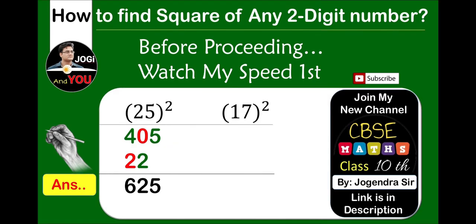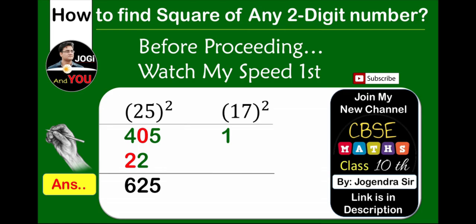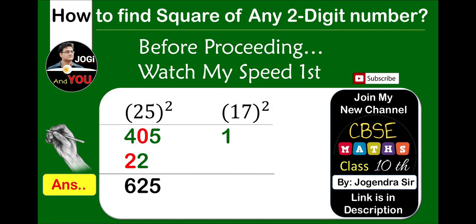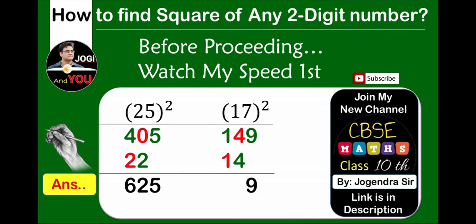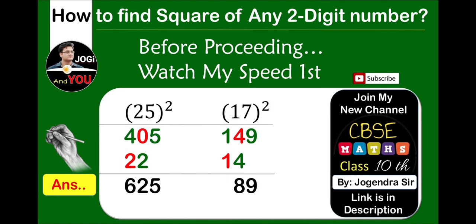Square of 25 is 625. Now second question, square of 17: 1, 14 and 49, 9, 8 and 2. Square of 17 is 289.